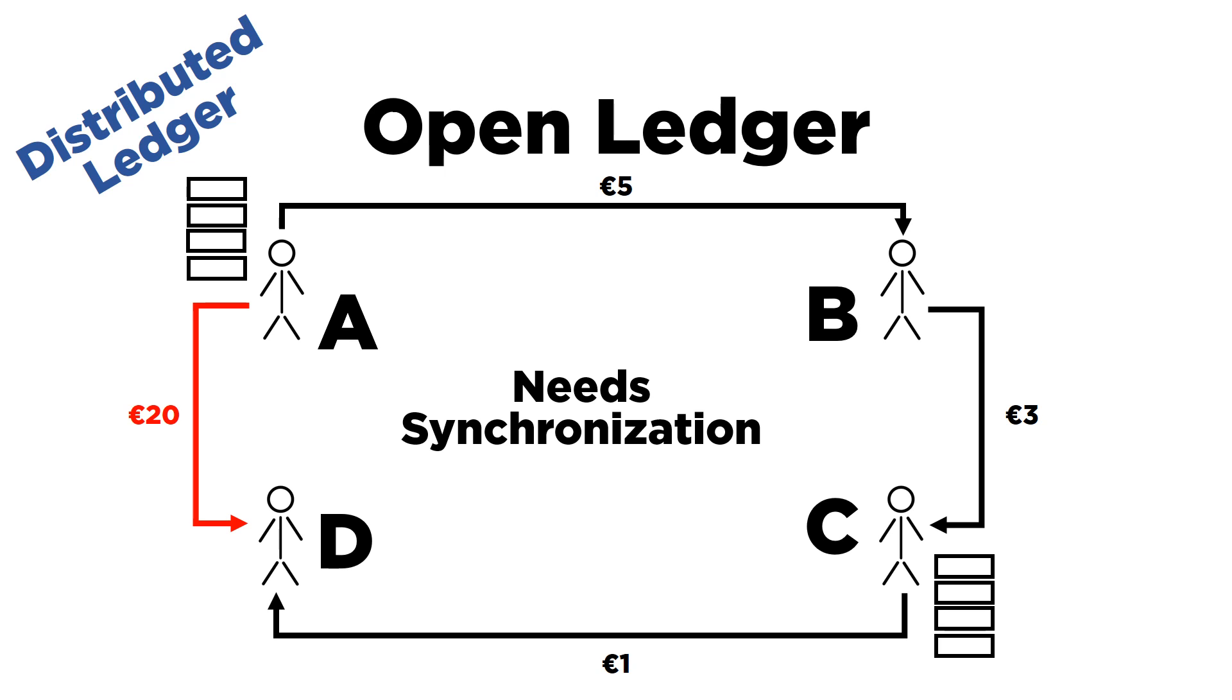We've seen that the ledger is open and anyone can see it. We've also seen that the ledger is distributed across various nodes. A node is just a unit in a network. So for simplicity, you can think of node as one person in a network of many people.